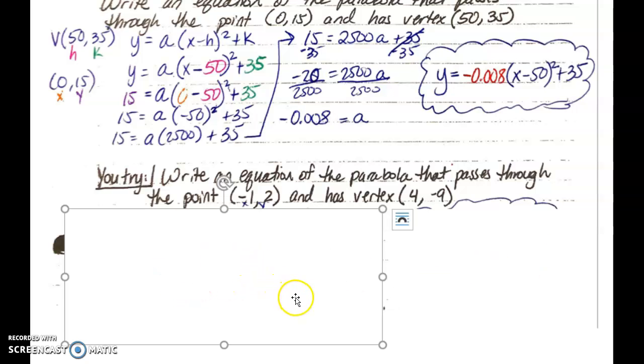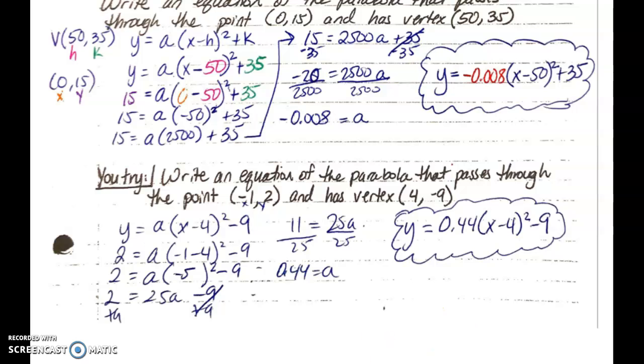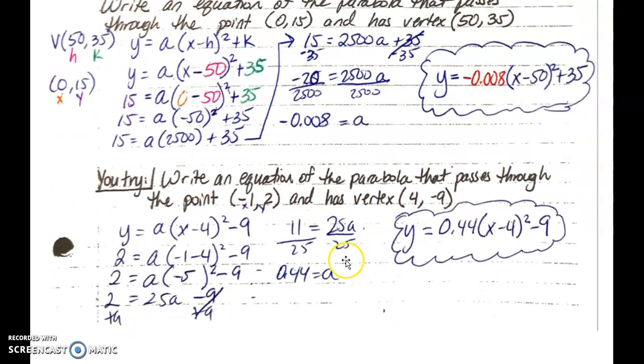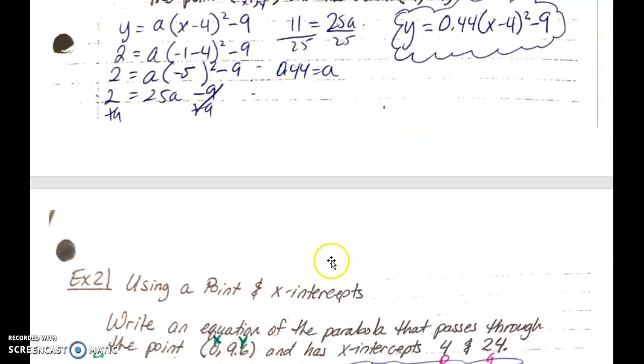So by this point, you should have had enough time, and the substitute should have gone through and checked your work. If the substitute hasn't already, please make sure that you take a thumbs up, thumbs down of how many students got the correct answer and how many students did not get the correct answer based on what they're about to see here. So let's check our work. So here is the final answer here, and they can go ahead and pause and check their work. So thumbs up, thumbs down as to whether or not you have this correct or not, and a is 0.44, you have x minus 4 squared minus 9.